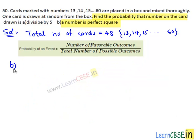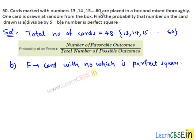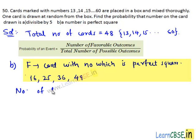Coming to part B, we need to find the probability that the number on the card is a perfect square. Let F be the event of getting a card with a number that is a perfect square. From 13 to 60, the numbers which are perfect squares are 16, 25, 36, and 49. So the number of favorable outcomes equals 4, which are cards with numbers 16, 25, 36, and 49.